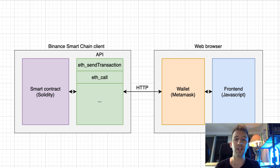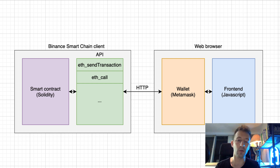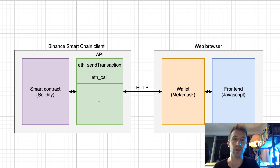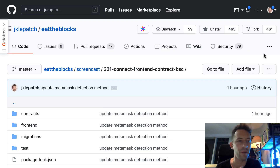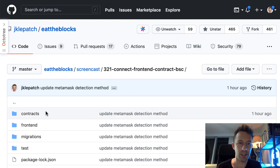That's it for the overview of how to connect a front-end to a smart contract. Next, we are going to start the coding. For our project, we're going to use a very simple smart contract.